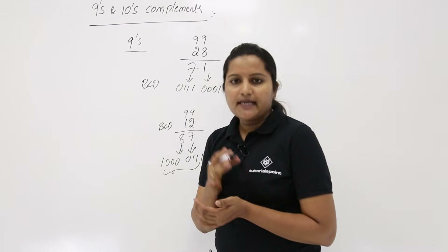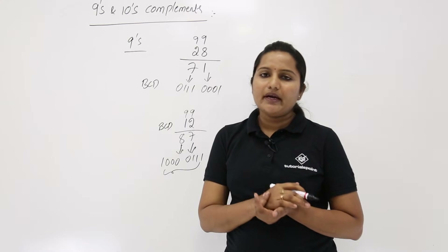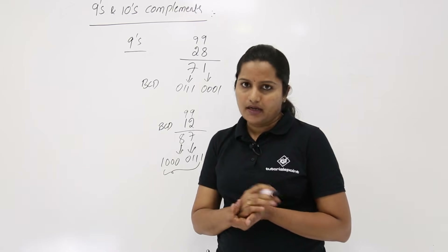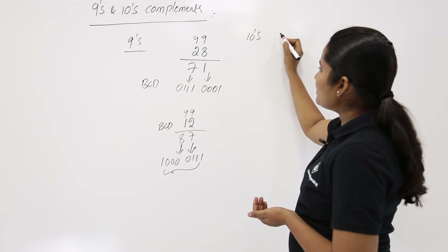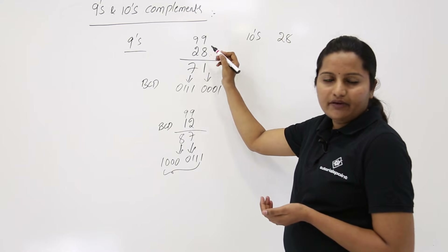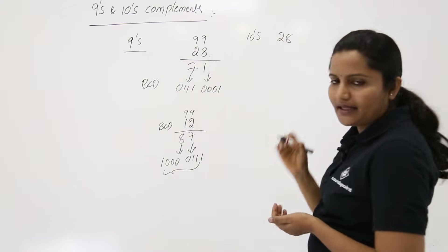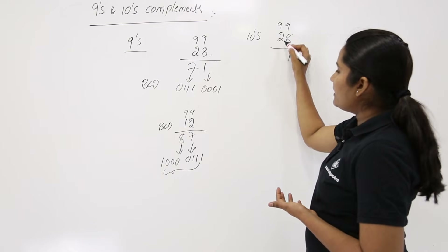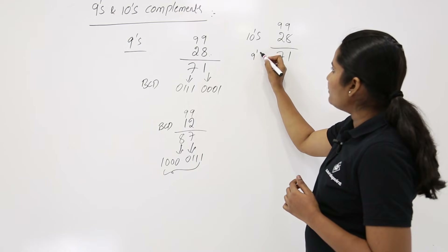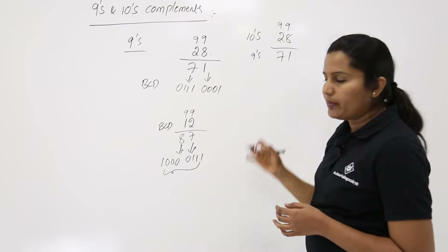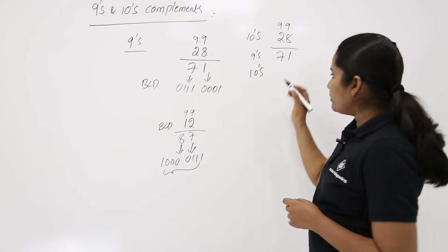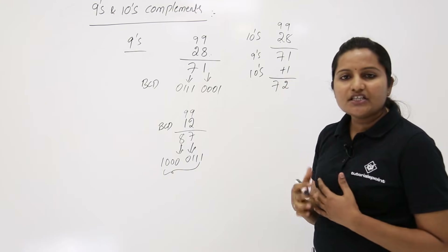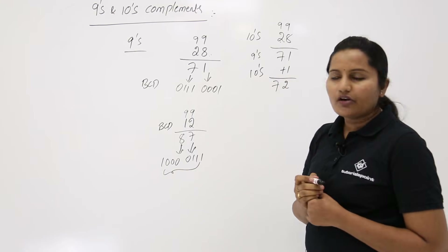In the same way we can get the 10s complement. The 10s complement of any BCD number can be obtained by adding 1 to the 9s complement of that BCD number. For example, to find the 10s complement of 28: first find the 9s complement — 9 minus 8 is 1, 9 minus 2 is 7, giving 71. Then add 1: 71 plus 1 equals 72. So 72 is the 10s complement of 28.